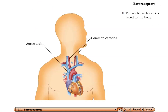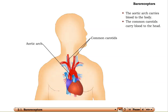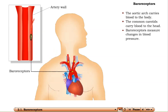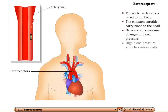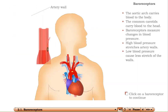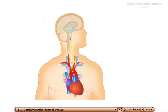The aortic arch supplies the body and the common carotids supply the head. Within these major arteries are structures called baroreceptors that measure blood pressure and send nerve impulses up to the brain. If pressure is high the walls stretch; if pressure falls the walls are less stretched.